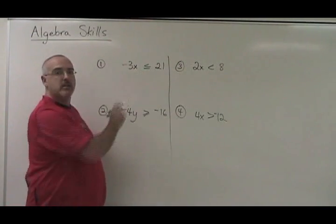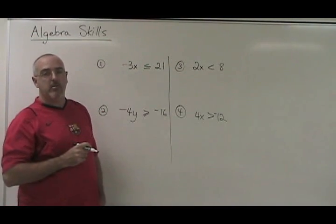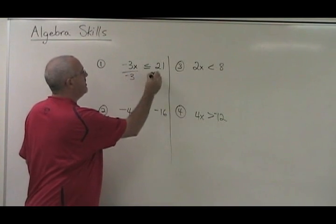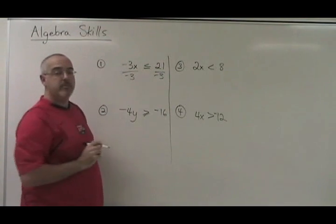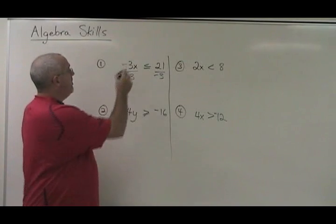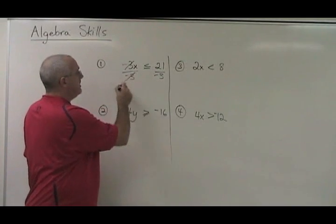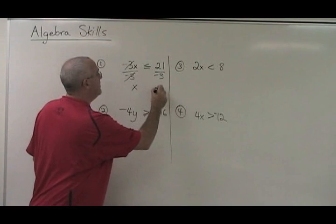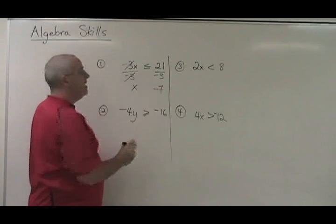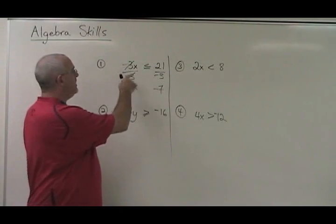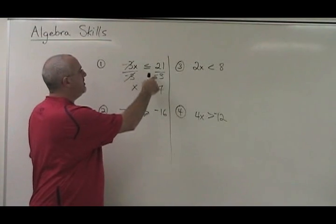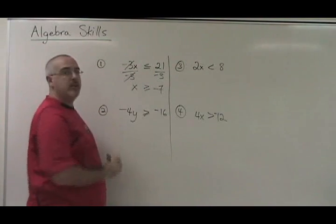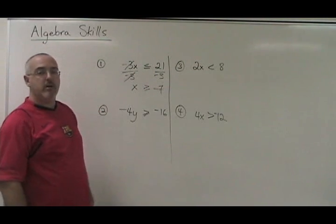In this situation, my x would be multiplied by a negative 3. So I will divide both sides of the equation by negative 3. These will cancel. My x is now isolated, and 21 divided by negative 3 is negative 7. The trick is that because I divided both sides by a negative number, this sign has to turn backwards. It becomes a greater than or equal to sign.